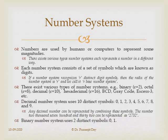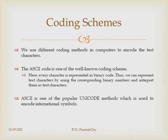The decimal number system has 10 distinct digits from 0 to 9, and the binary number system has two distinct digits: 0 and 1. There exist different coding schemes in a computer to represent text characters. ASCII is one well-known coding scheme where every character is represented in binary code, allowing us to represent text characters using corresponding binary numbers.